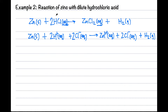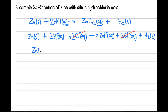Now we compare the left-hand side and the right-hand side of the equation. We find that chloride ions are the spectator ions — they are found on both sides, so we cancel them. Now we can copy out everything remaining to get the final ionic equation.